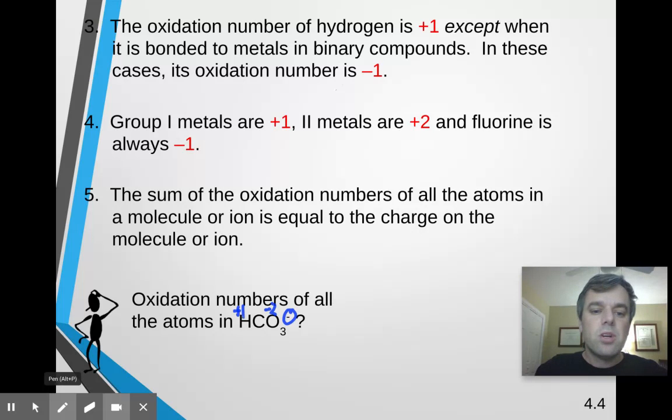So, we've got negative 6 and positive 1. So, our total charge is negative 5 without considering carbon. So, we're ultimately solving that negative 5 plus what equals our total charge, which is negative 1? And that answer would be 4. So, carbon is a positive 4.